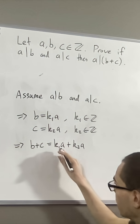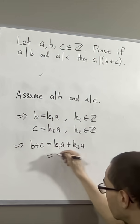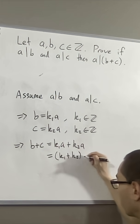And we can factor out the a. So this is just k1 plus k2 times a.